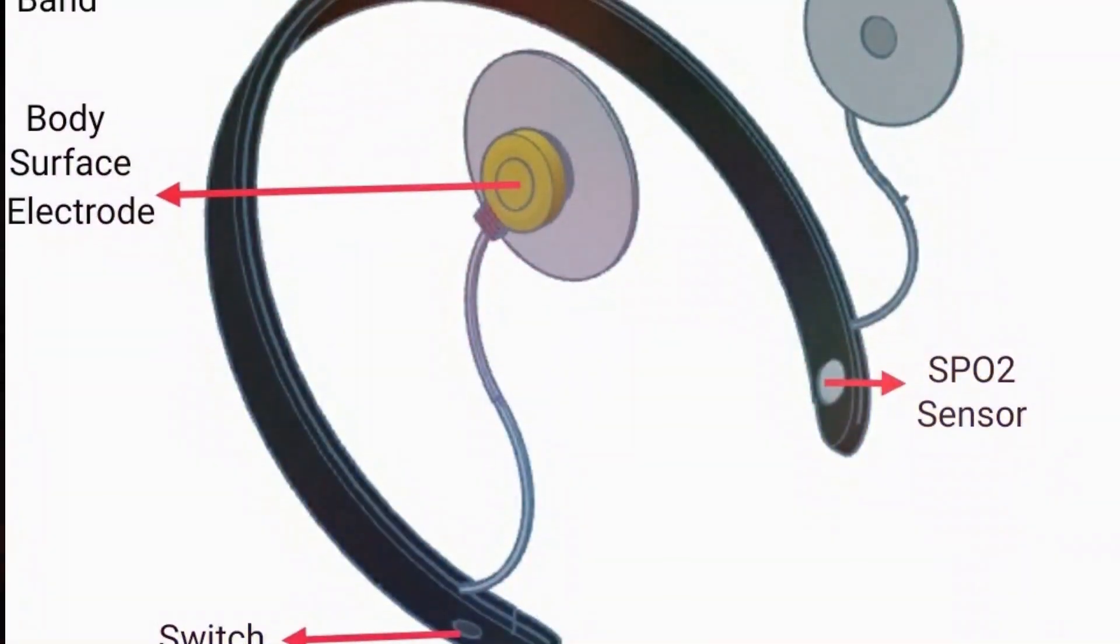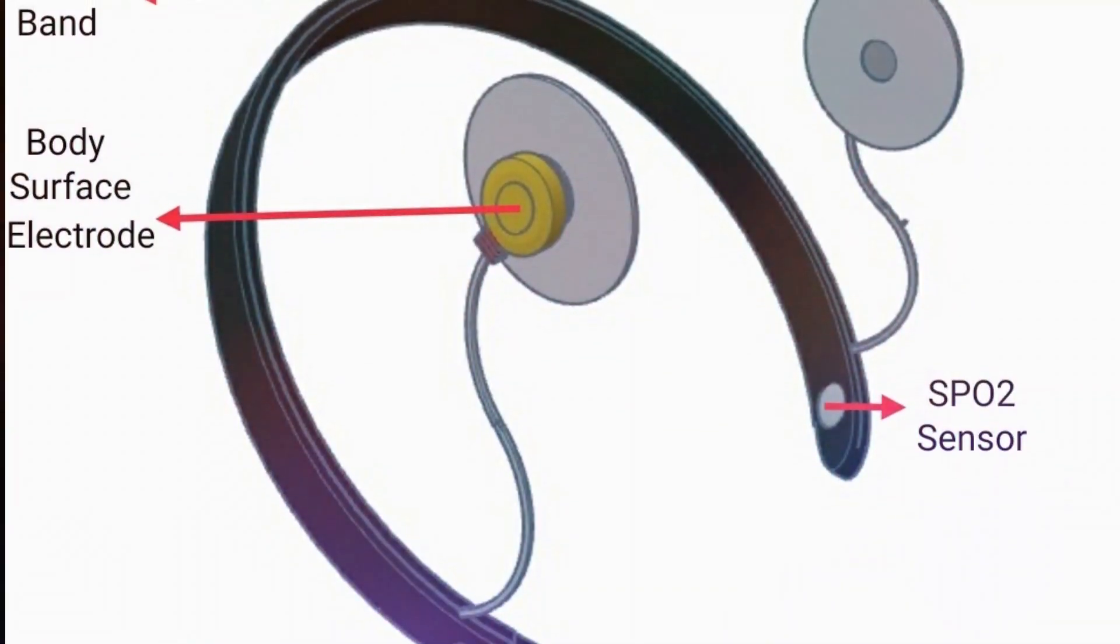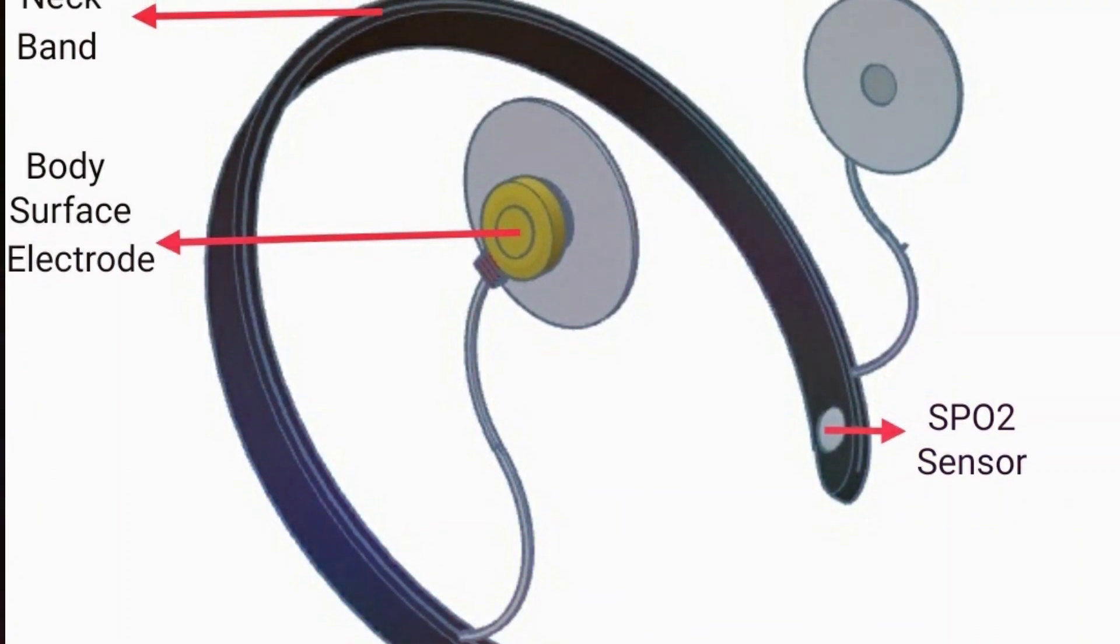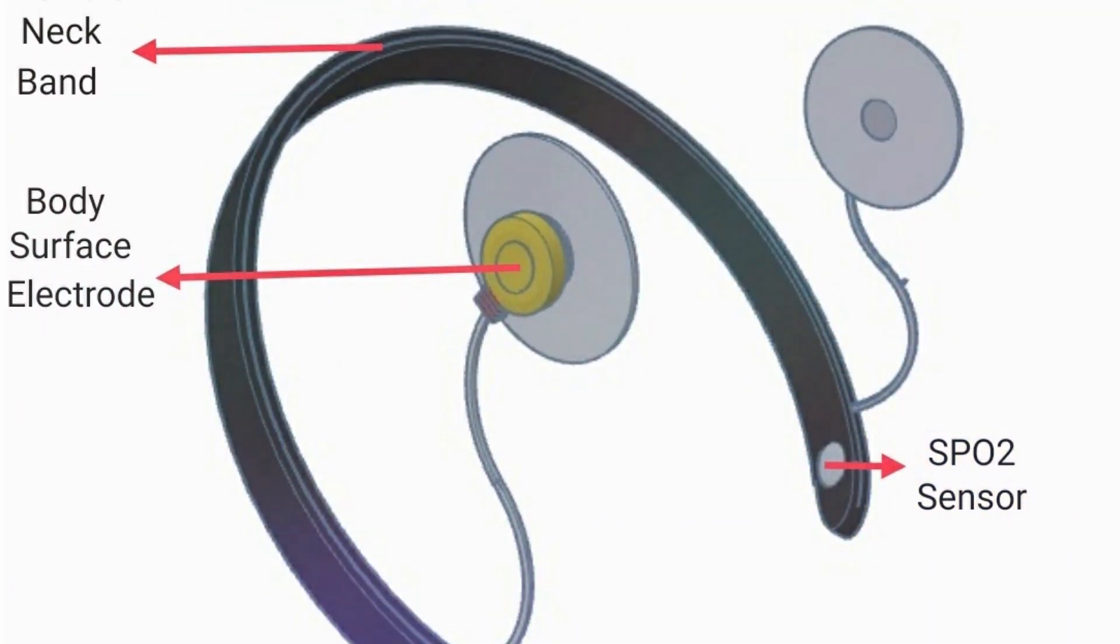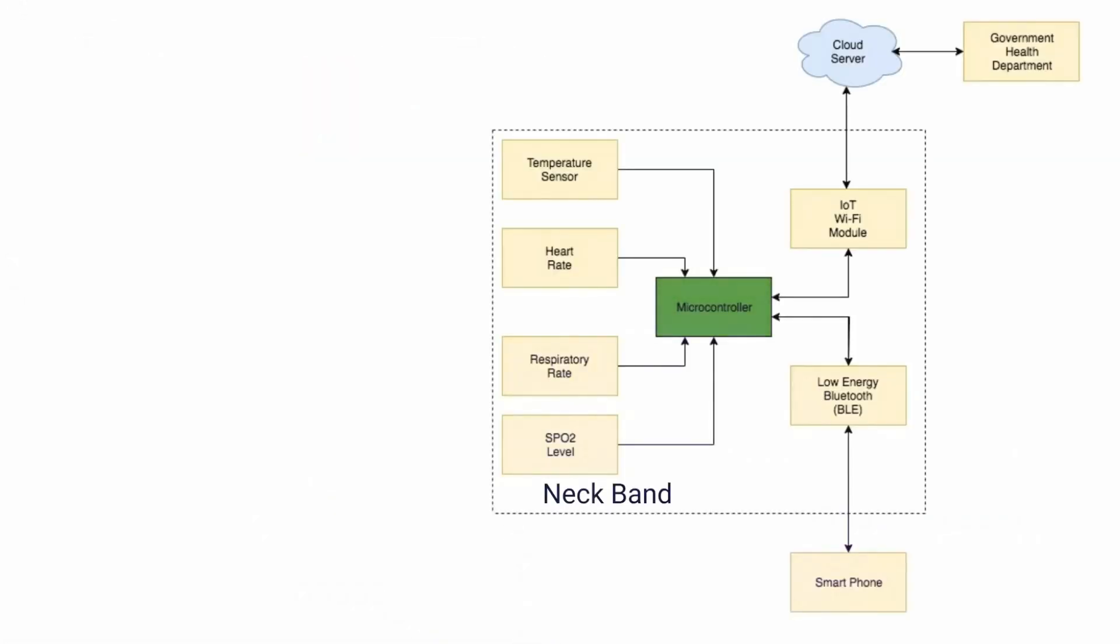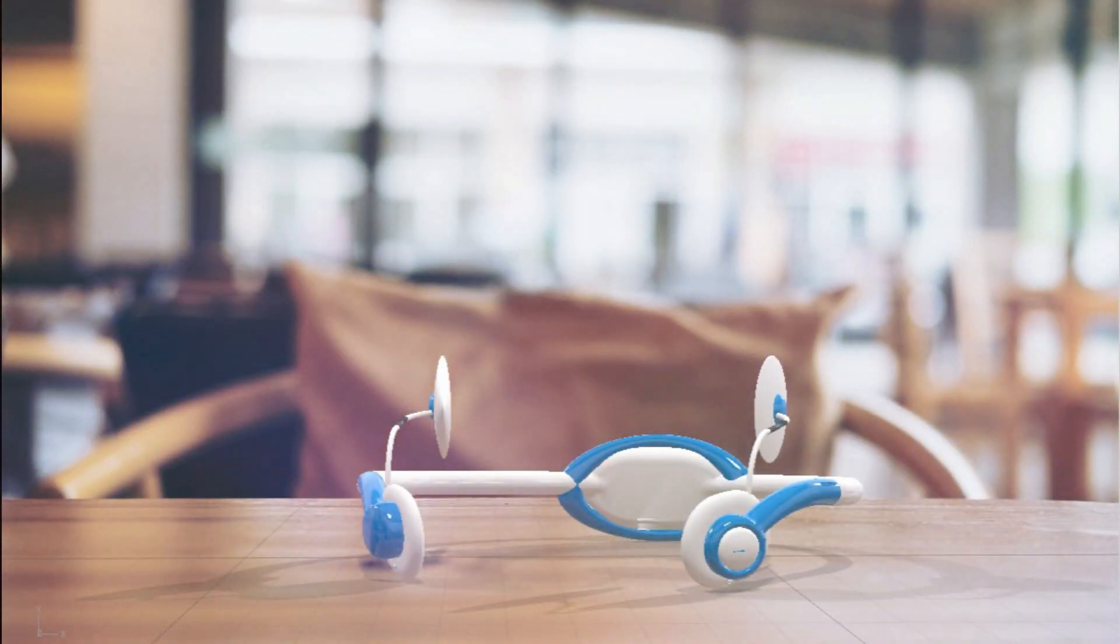The surface electrodes provided in the band help in detecting the heart rate, coughs, and respiratory rates of the user. Contactless neck PPG monitors the SpO2 levels, and the temperature is kept in check with the help of a temperature sensor.